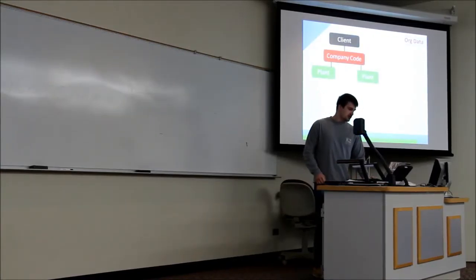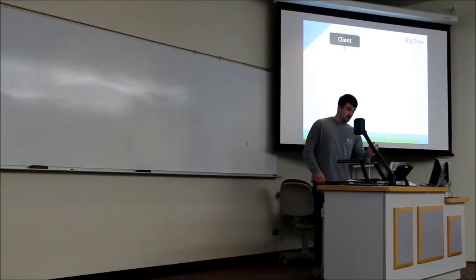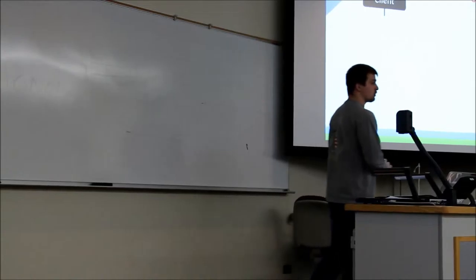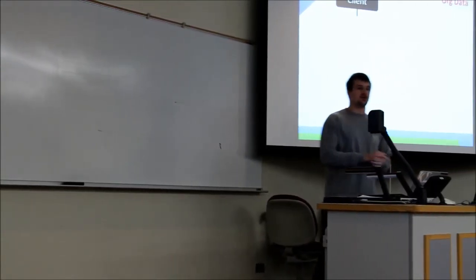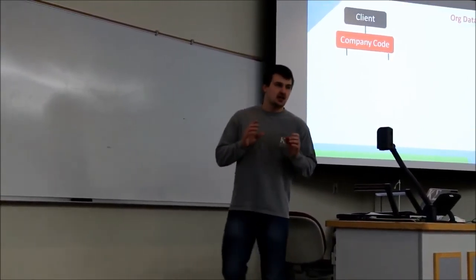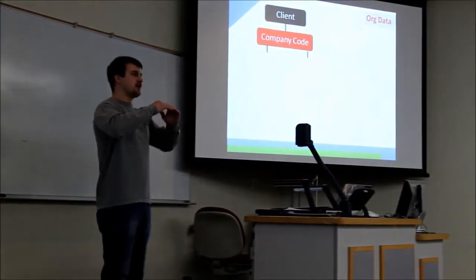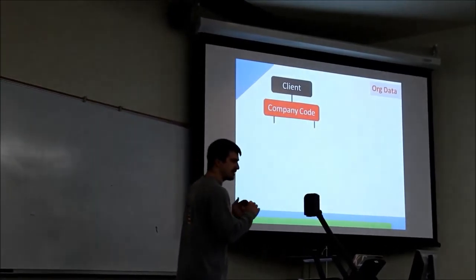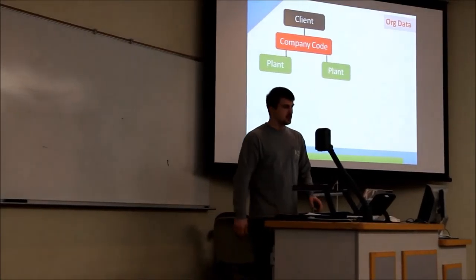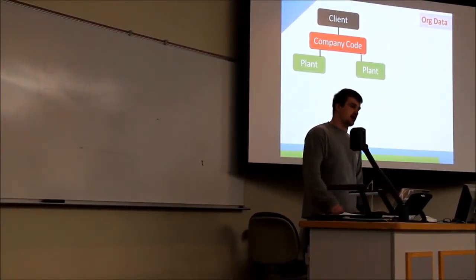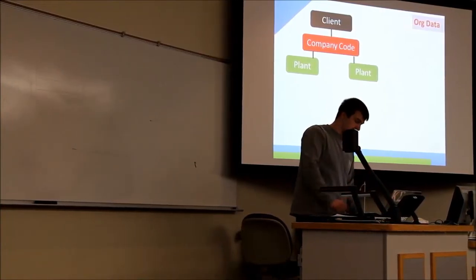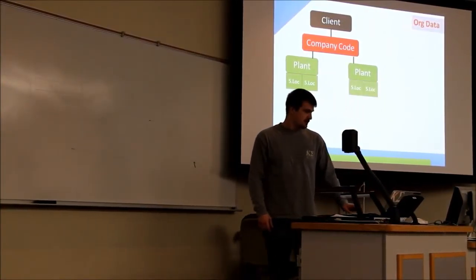So first we'll go with the organizational structure of materials management and sales and distribution. We start with the high-level organization, which is the client. Many of you know the global data is kept. Below that is the company code, which is the largest or highest form of a complete set of books, or a legal set of accounting. Below that, the plant. And subsections of the plant are storage locations.